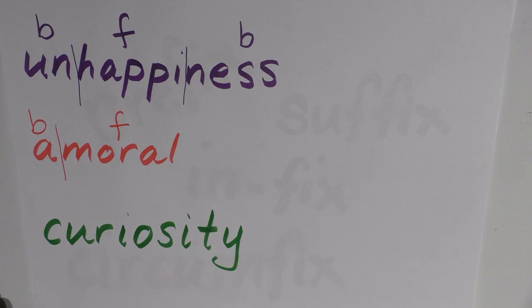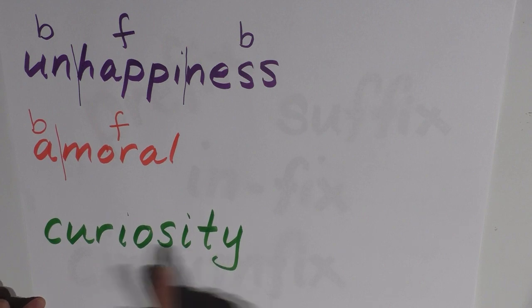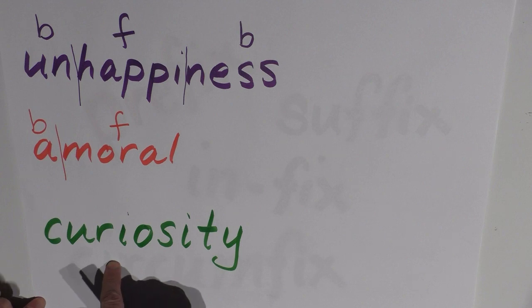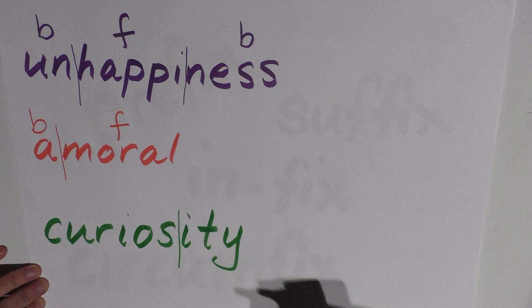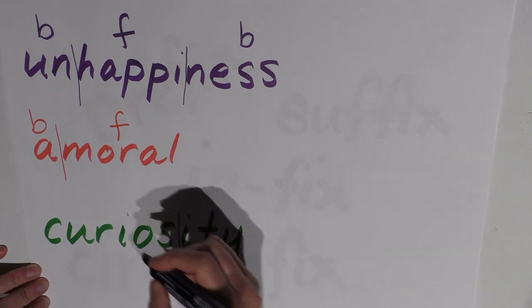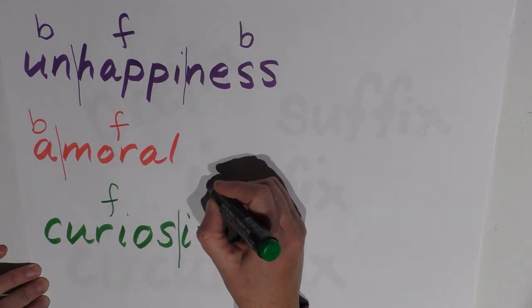Here's our final word: 'curiosity.' I think we have two morphemes in this. We have 'curious,' which is an adjective, and then 'ity,' which is turning the adjective into a noun. So once again, I've used a derivational morpheme, that's interesting. This is the free morpheme, 'curious,' and then 'ity' is our bound morpheme.